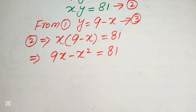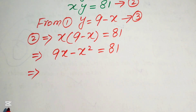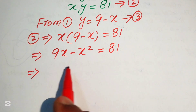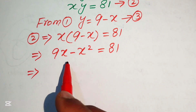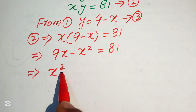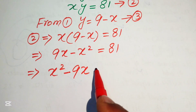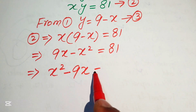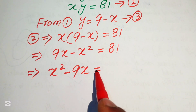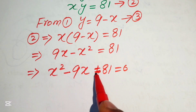This equation is quadratic in x, so we write it in standard form. Moving terms to the right-hand side: minus x squared becomes plus x squared, and 9x moves as minus 9x, giving us x squared minus 9x plus 81 equals 0.